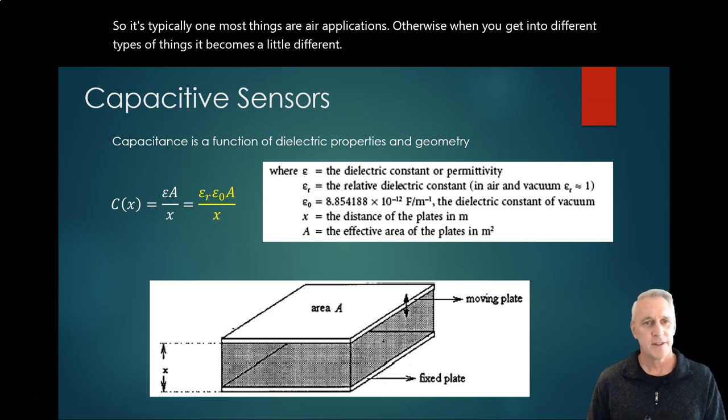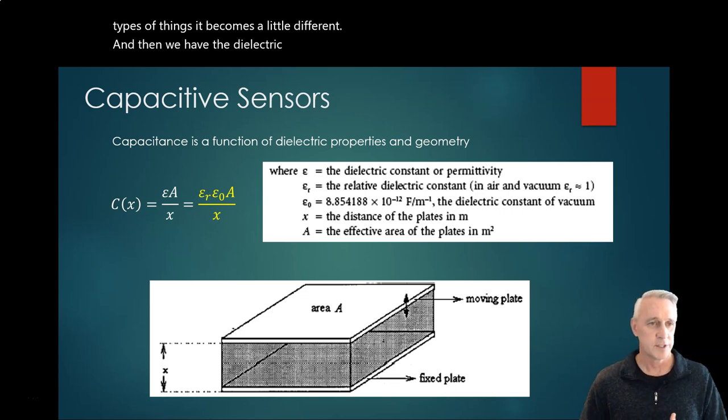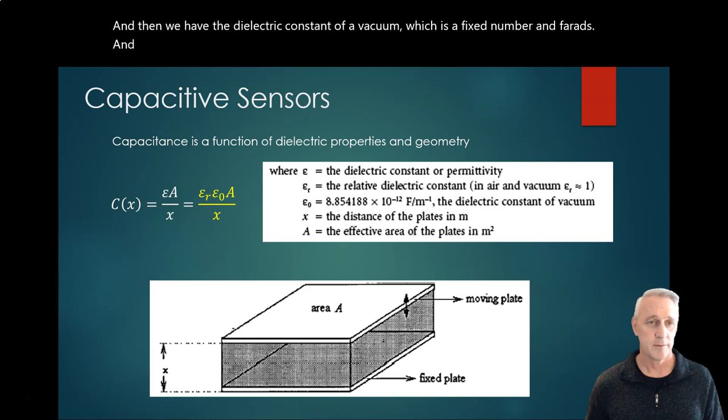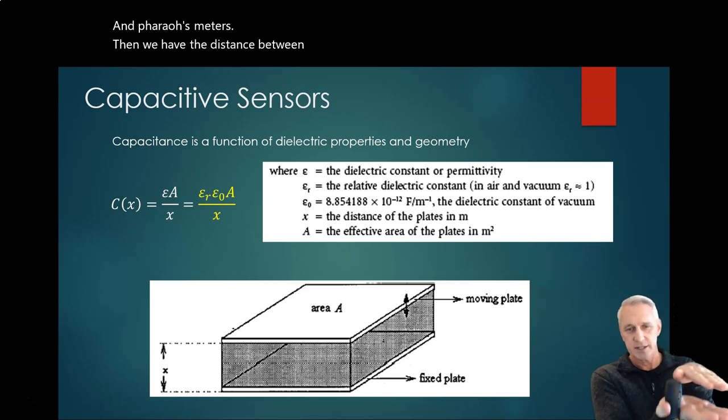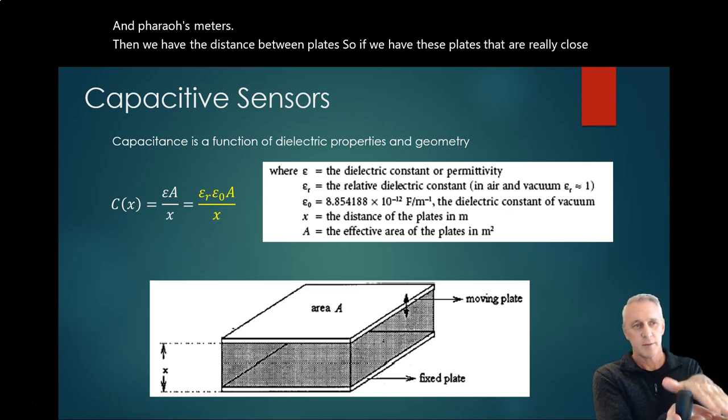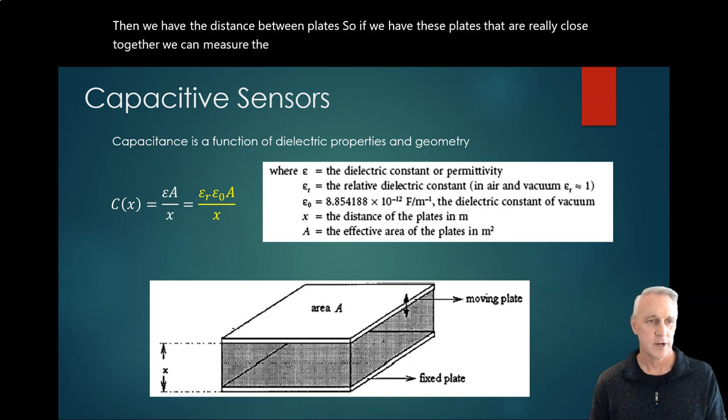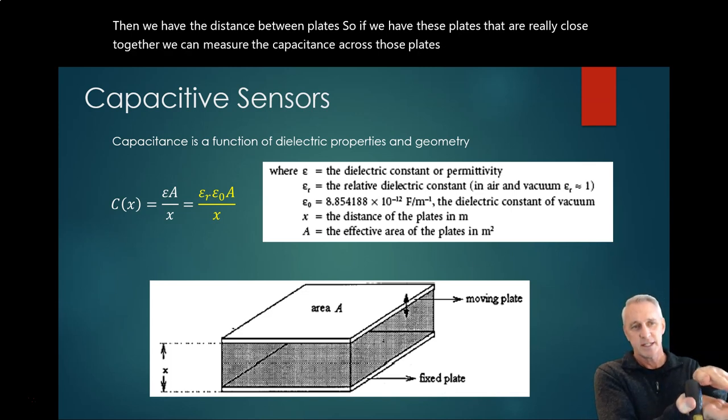And then we have the dielectric constant of a vacuum, which is a fixed number in farads per meter. And then we have the distance between plates. So if we have these plates that are really close together, we can measure the capacitance across those plates.